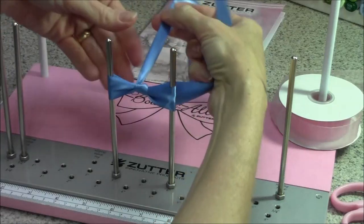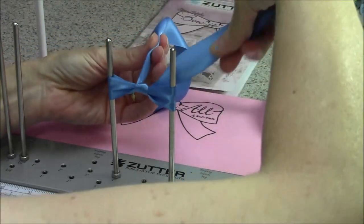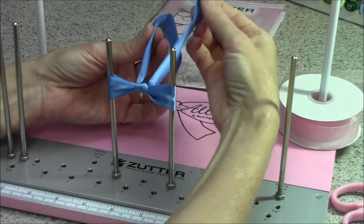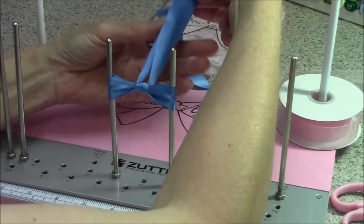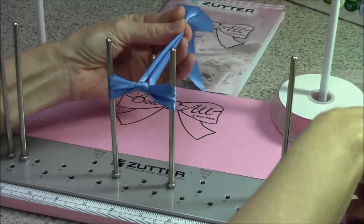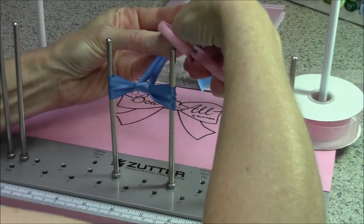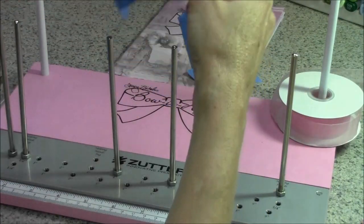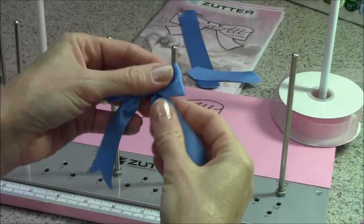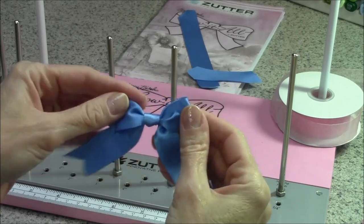And then before you take it off the pegs, if you want to, you can trim your tails so that they will be the same length. And then when you're done, just slide it off and you have a perfect little bow.